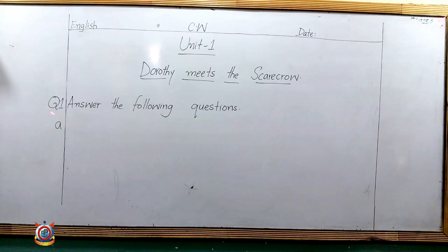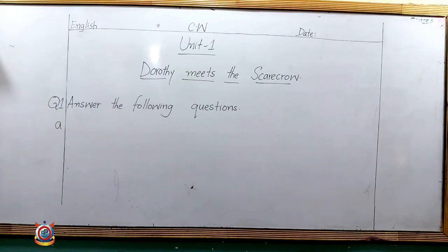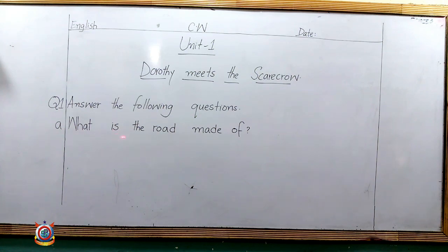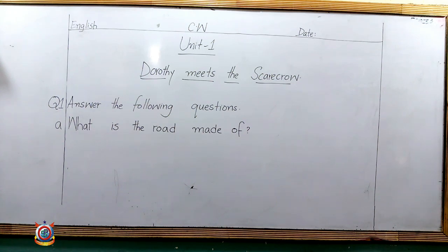Then we will move on to the first question, which is: Answer the following questions. Our first question is: What is the road made of? This is the easiest question because I have asked this question many times while reading. The answer is: The road is made of yellow bricks.